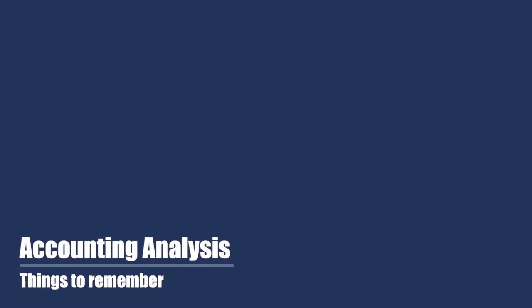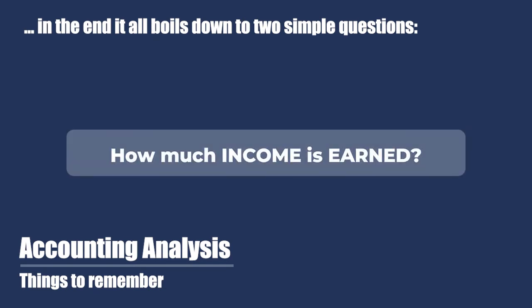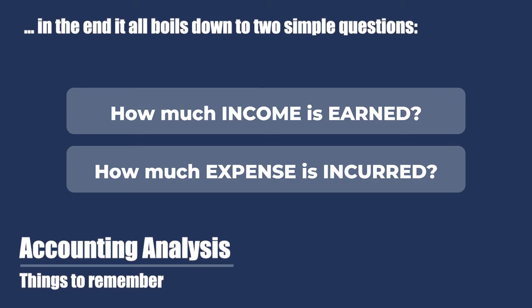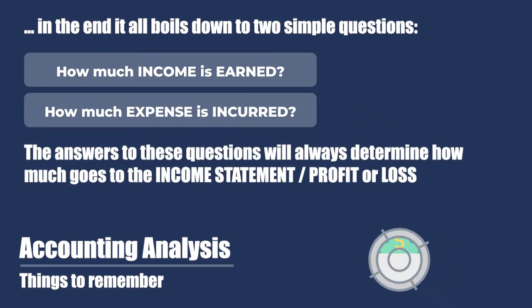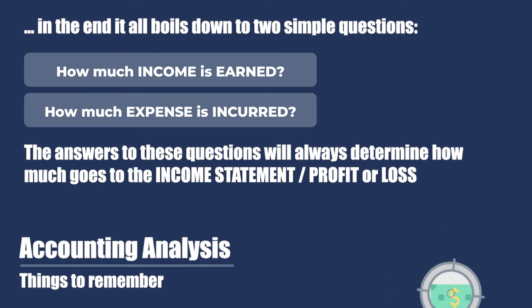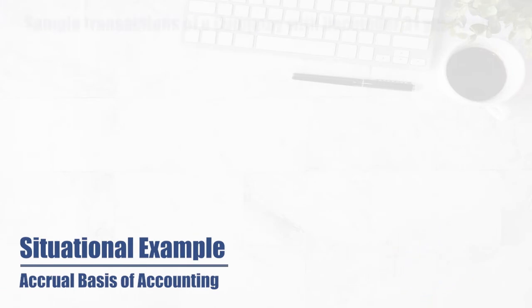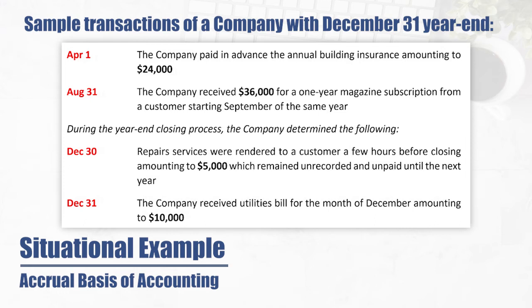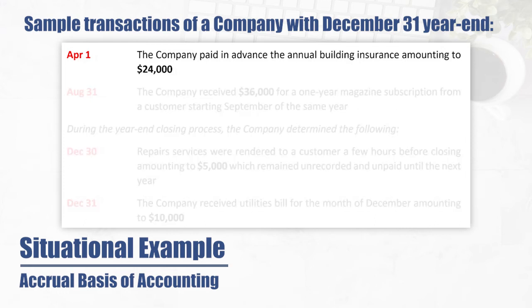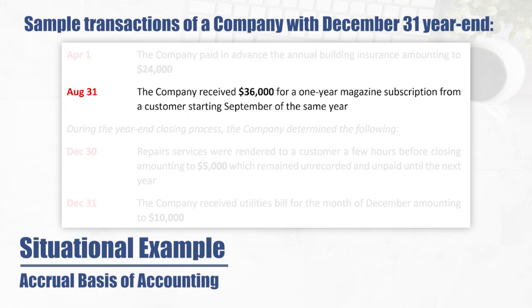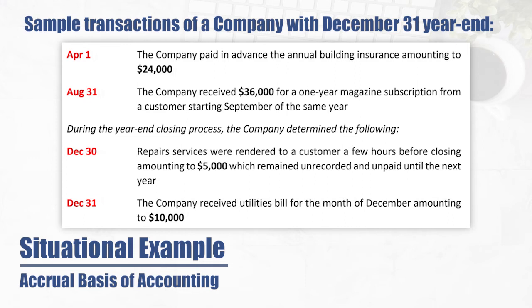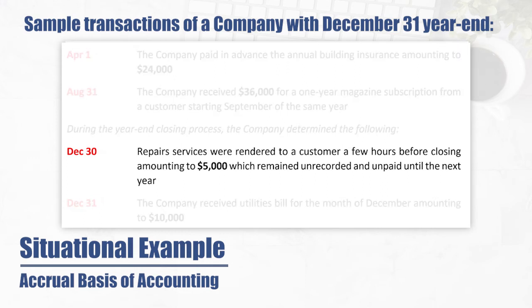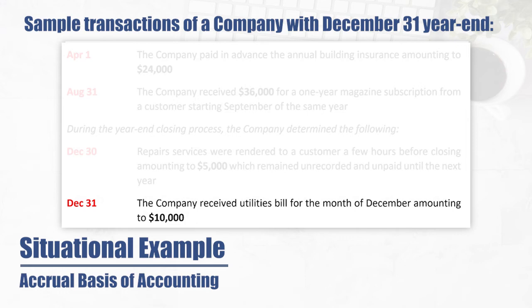There are a number of ways of accounting for accruals and deferrals, but in the end it all boils down to two simple questions: how much income is earned, and how much expense was incurred during the period? The answers to these questions will always determine how much goes to the profit or loss, and in case of deferrals or prepayments, the balance sheet normally corrects itself. To illustrate, let's take some sample transactions of a company with a December 31 year end. On April 1 the company paid building insurance of $24,000 in advance. On August 31 the company received $36,000 for a one-year magazine subscription starting September. During closing, the company determined that repair services of $5,000 were rendered on December 30 and remained unpaid, and that a utilities bill for December amounting to $10,000 was received.